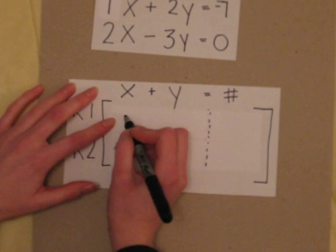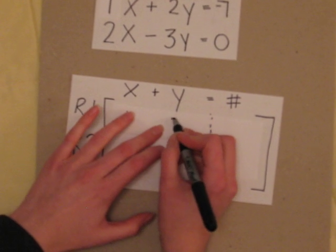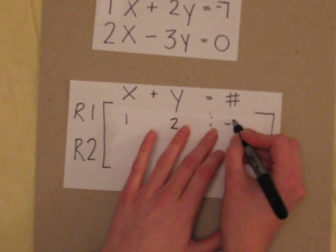So if we're going to take the numbers from the first equation, we're going to put them in the first row. So, under x, we put 1. Under y, we put 2. And under the number, we put negative 7.